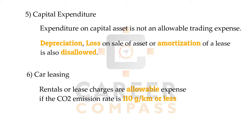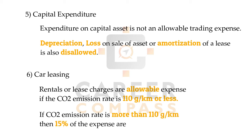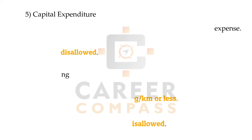The sixth item is car leasing. If we lease a car with a CO2 emission of below 110 grams per kilometer, the lease expense will be fully allowed. However, if the CO2 emission is more than 110 grams per kilometer, 15% of that expense will be disallowed.